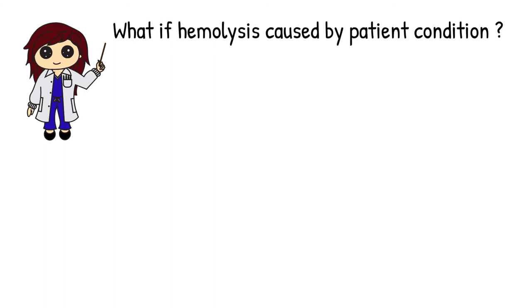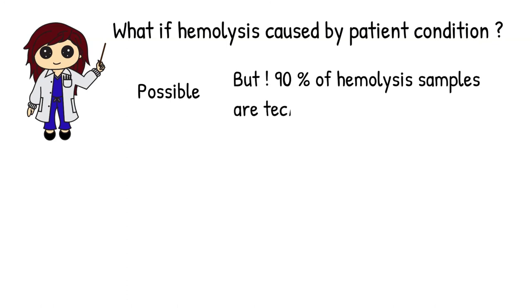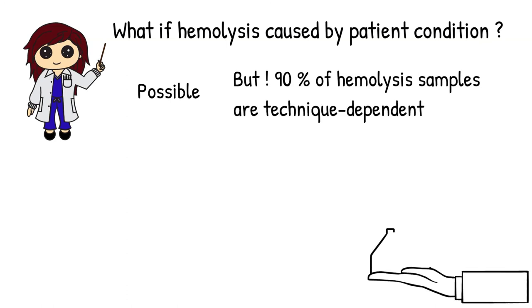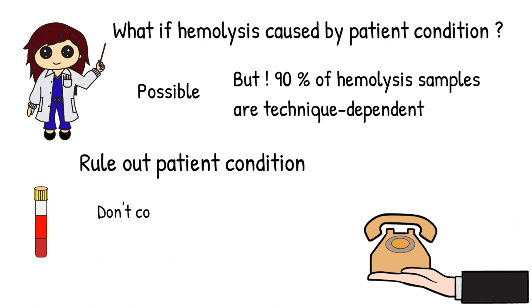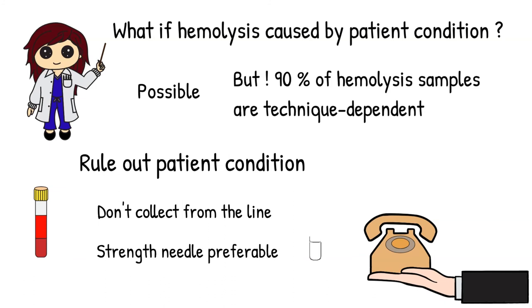The clinical laboratory scientist would reject and request a new specimen upon receiving a hemolyzed sample. Now, what if the patient's condition caused the red blood cells to hemolyze? It is possible but less common. 90% of the time, hemolysis is technique-dependent. When this happens, request a new sample and let the nurse or phlebotomist know that the specimen is hemolyzed. If the collection was drawn from a line, that could be part of the problem too. When I call to ask for a specimen recollection, I would say that the first sample is hemolyzed and, to rule out a patient condition, a straight needle sample is required or strongly preferable.